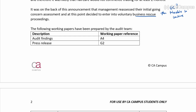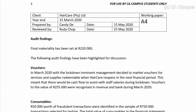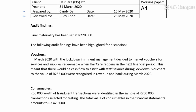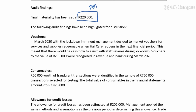The following working papers have been prepared by the audit team: audit findings A4 and press release G2. Final materiality has been set at R220,000. The following audit findings have been highlighted for discussion. Vouchers: in March 2020, with lockdown imminent, management decided to market vouchers for services and supplies redeemable when Haircare reopens in the next financial period — meaning risks and rewards transfer in the next period. There is an assertion-level risk regarding revenue and cutoff or occurrence if these were recorded in the current period.